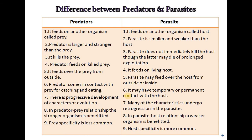Fourth, a predator feeds on killed prey while a parasite feeds on a living host. Fifth, a predator feeds on prey from outside, while a parasite may feed from outside as well as from inside. Sixth, a predator comes in contact with prey for catching and eating, while a parasite comes in contact with its host whether temporarily or permanently, for nutrition, protection, or transfer. Seventh, predators show progressive evolution of characters, while parasites undergo retrogression.